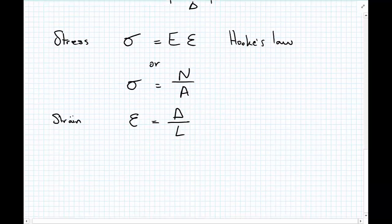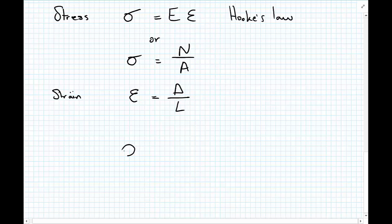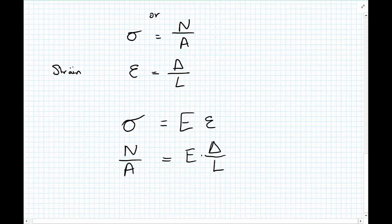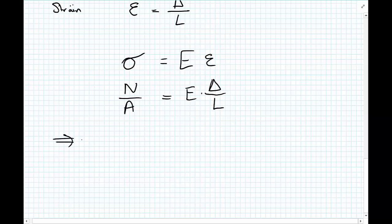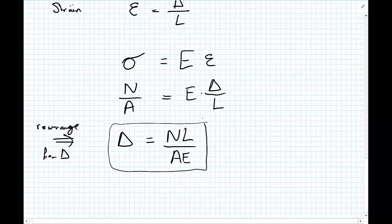So we're going to go back to our original Hooke's law, sigma equals Young's modulus times strain. And we're going to substitute that for sigma was equal to force divided by area, which was equal to Young's modulus multiplied by the change in length divided by the original length. And then we're going to rearrange for delta. So rearranging this equation in terms of delta, we get that delta equals NL divided by AE. And this is a relatively well-known formula for calculating the deflection of a single bar.